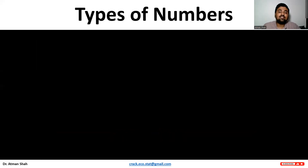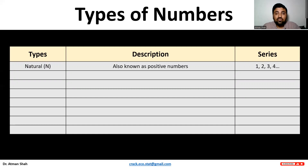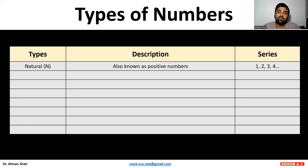Now let's understand the types of numbers. The first column shows the types, the second column depicts the description, and the third column shows the series. First, we have natural numbers. These numbers are also known as positive numbers. The series starts from 1: so 1, 2, 3, 4 up to infinity.